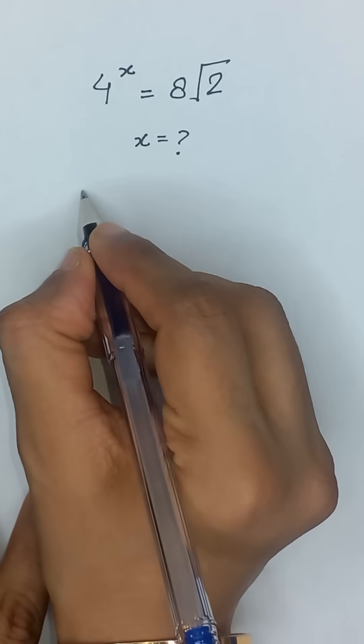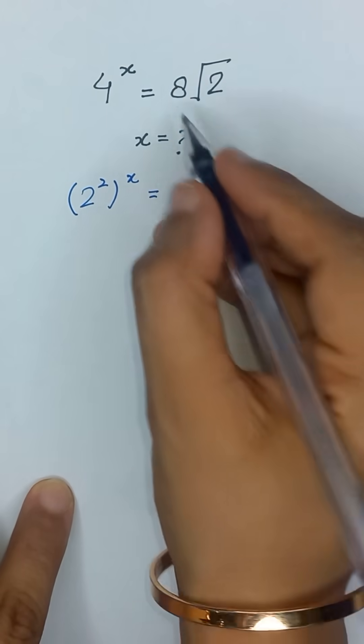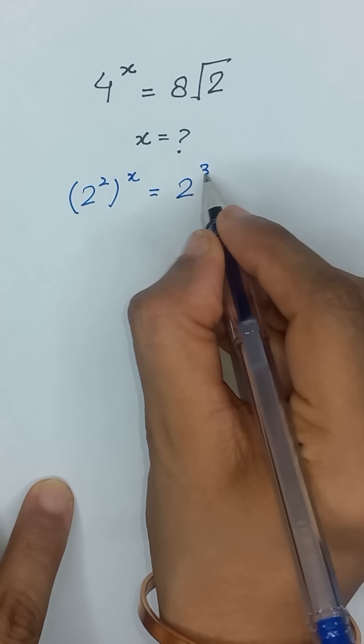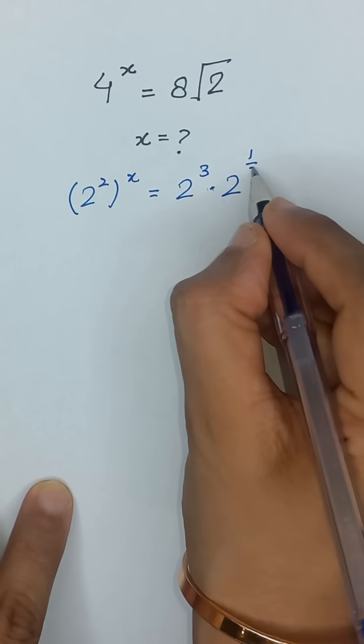First of all, we will write 4 as 2 squared to the power x. It can be written as 2 to the power 3, and the square root of 2 can be written as 2 to the power 1 divided by 2.